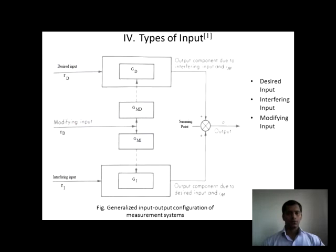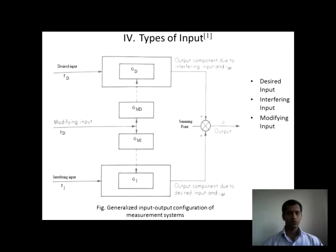The fourth point is types of input — whatever types of input we get from our sensor. First is desired input, second is interfering input, and third is modified input. Desired input means the input which is desirable. Interfering input means we are getting some errors — error due to environment, error due to the instrument, and error due to an unskilled worker. We have to modify this input, or in other words, we have to eliminate this error by using modified input. Then only we can supply this input to the summing point. We can supply desired input directly to the summing point.